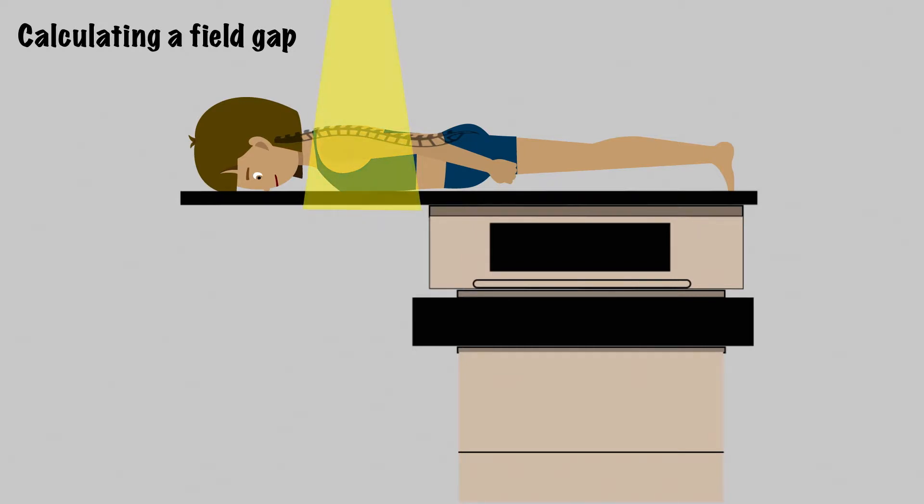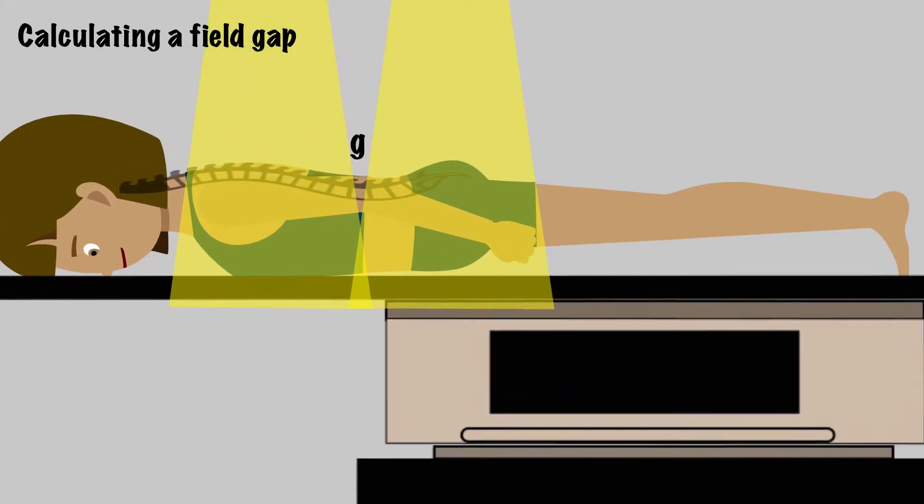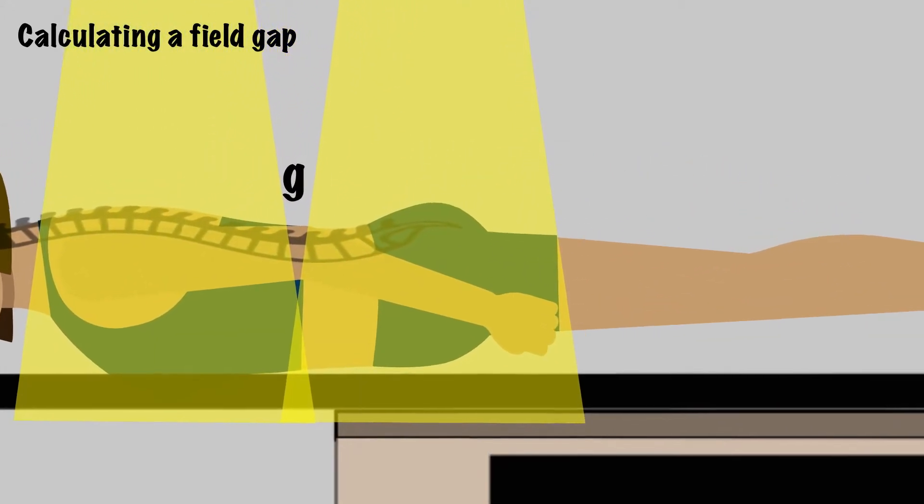We start with the first field, and then the second field. There's a gap at the skin, a match point, and an overlap area of the beams as they exit the patient. Say we want to match at some depth, D. The patient is set up at some source to skin distance, SSD1, with a field size we'll call FS. There's a gap between the fields called G. What we want to do is find the gap given the known parameters.